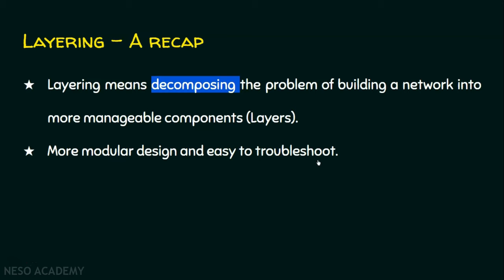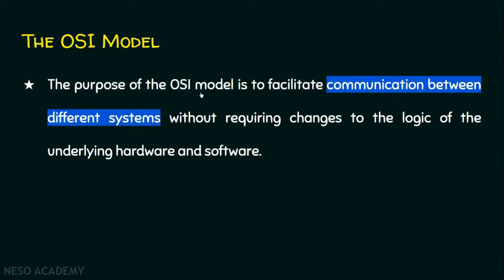Now we will move on to the purpose of the OSI reference model. The purpose of the OSI model is to facilitate communication between two systems — meaning two different systems without requiring changes to the logic of the underlying hardware and software. This means two different computers with two different operating systems, or even two different devices with two different functionalities.